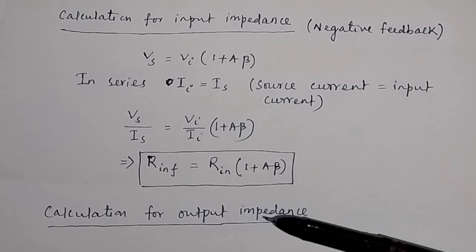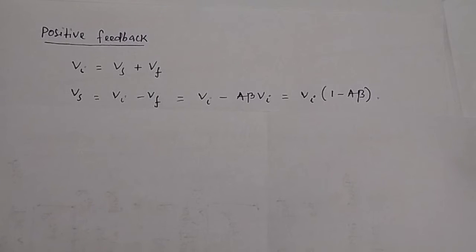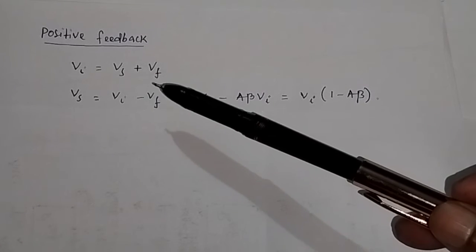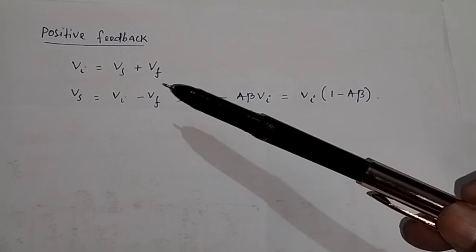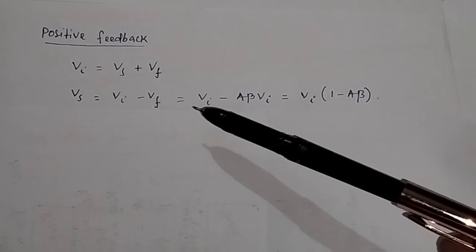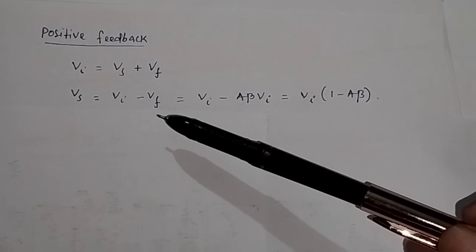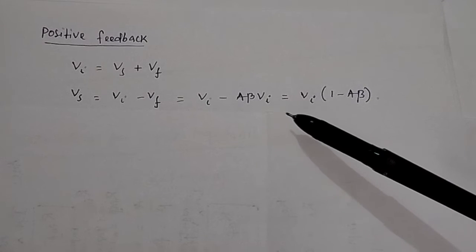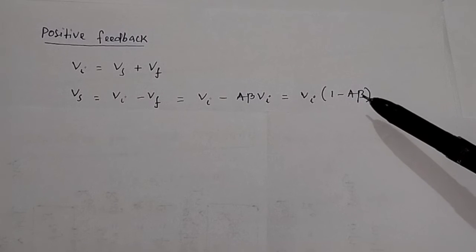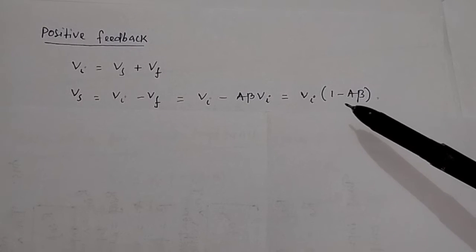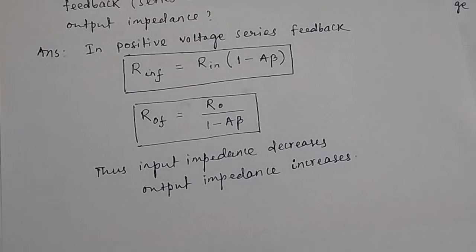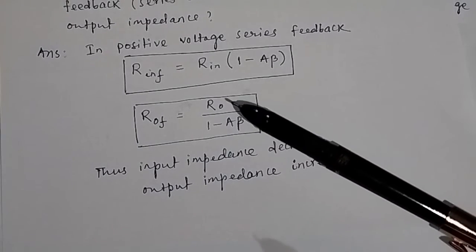Similarly you can calculate for the output impedance. For positive feedback, the input voltage equals source voltage plus the feedback voltage, so source voltage equals VI minus VF. Since VF equals Aβ·VI, this becomes VI(1 − Aβ), giving the impedance term (1 − Aβ). It is easy to find these relations for positive voltage series feedback.